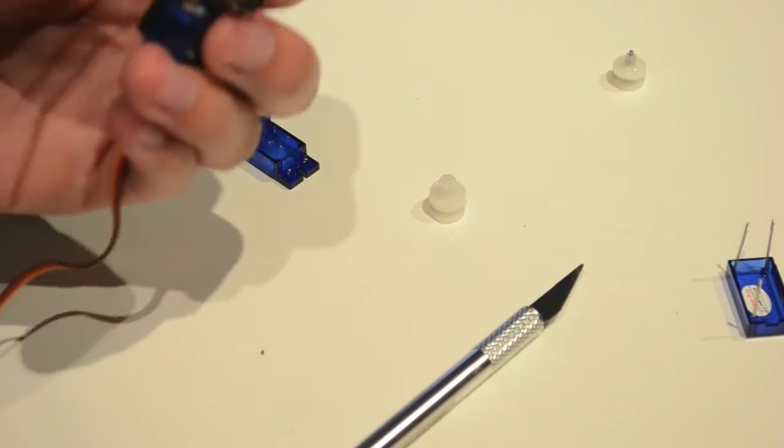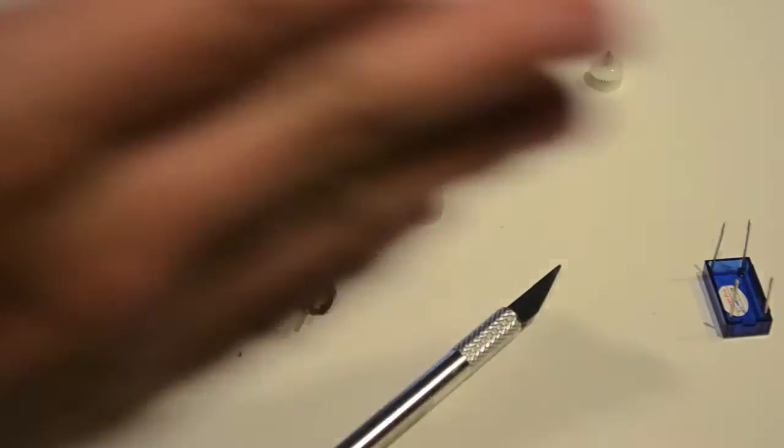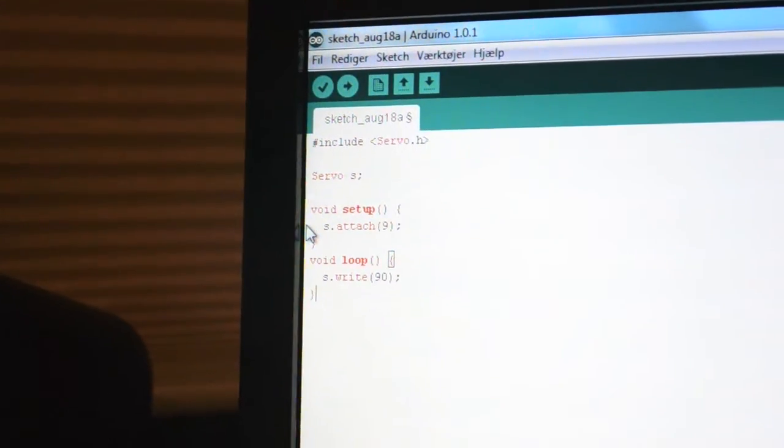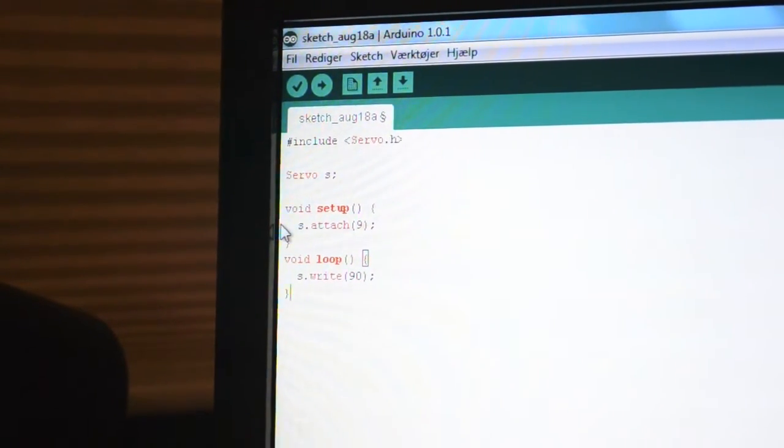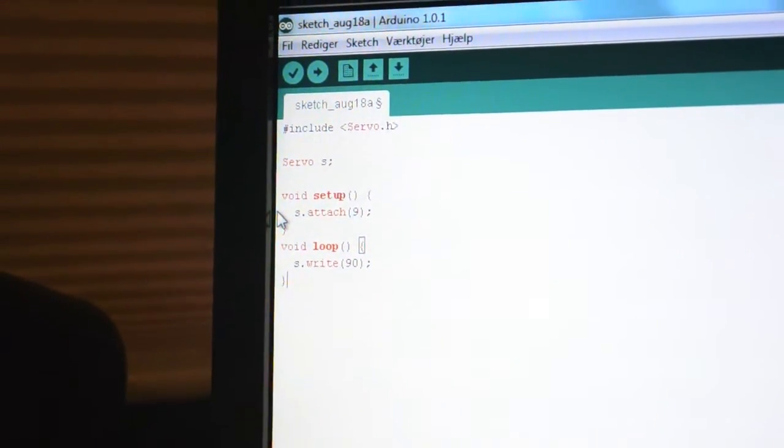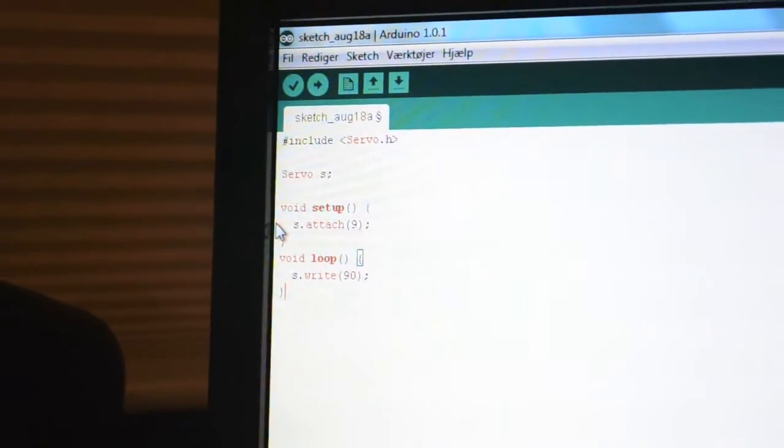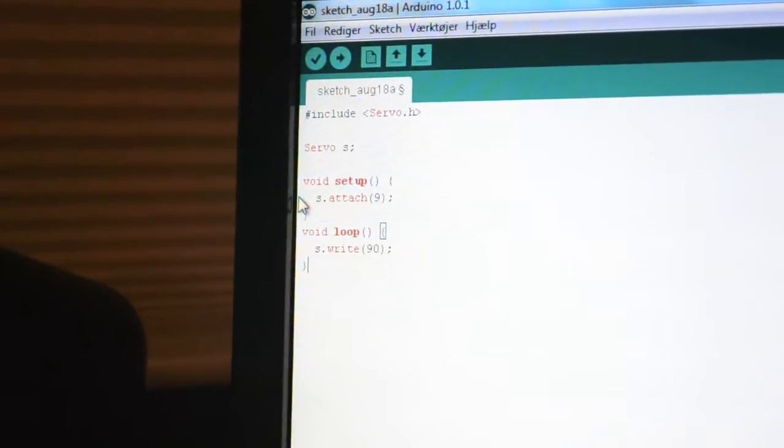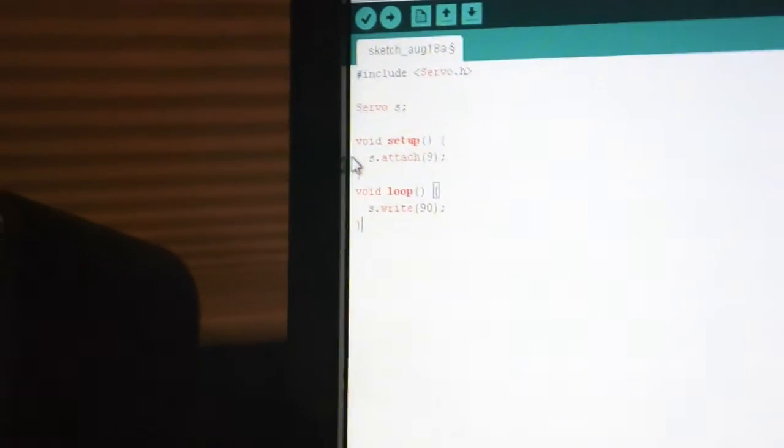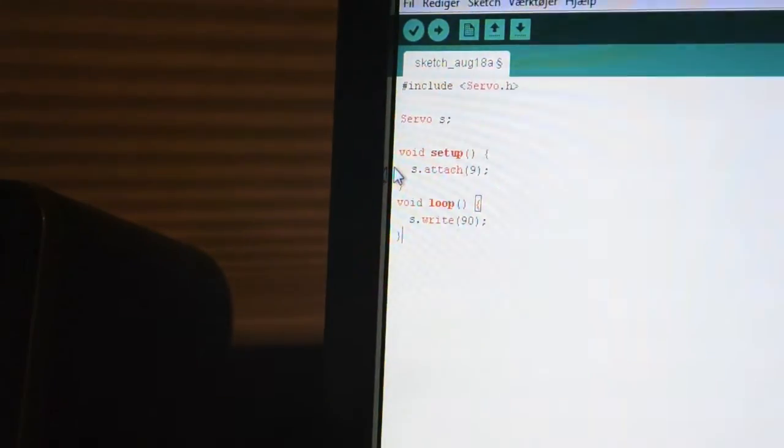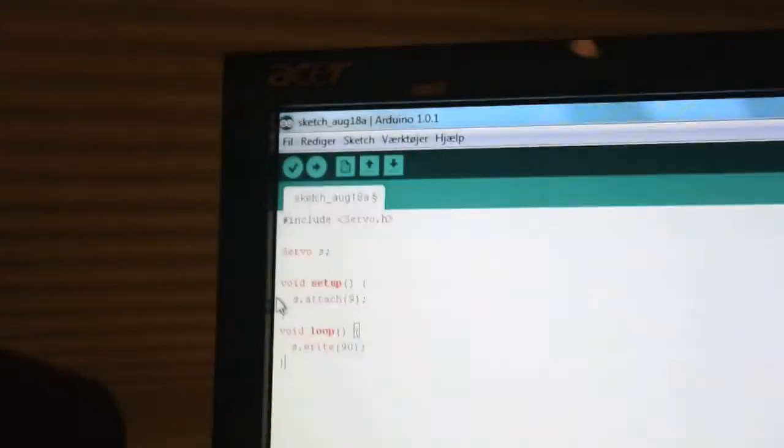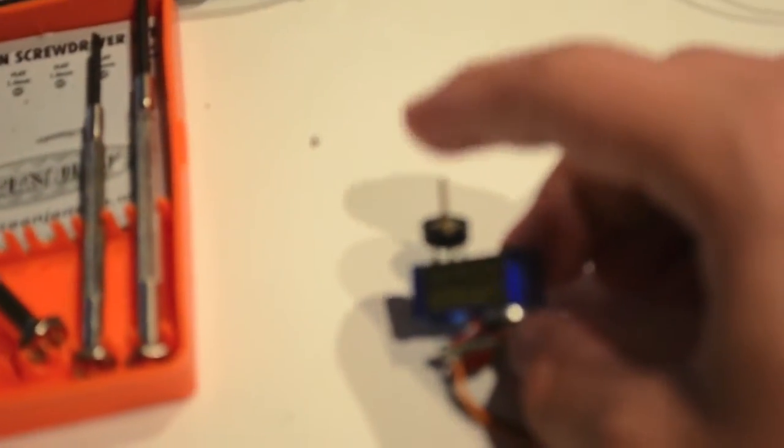So this is a potentiometer but first we are going to write some code. So this is the code that I wrote. It is very simple. What it does is it rotates the servo until the center position is 90. The center position is regulated by that potentiometer that I showed you about before and that is why that is interesting.